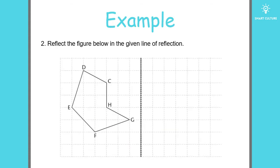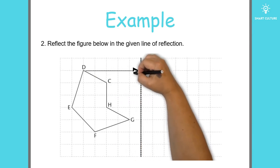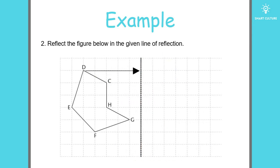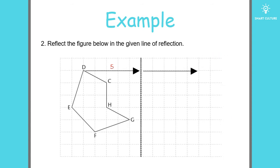Let's take a look at another example: reflect the figure below in the given line of reflection. We'll reflect each point of the figure perpendicularly across the line of reflection. Let's start with point D — you'll see that point D is five units away from the line of reflection, so the image of point D should also be five units away from the line of reflection.